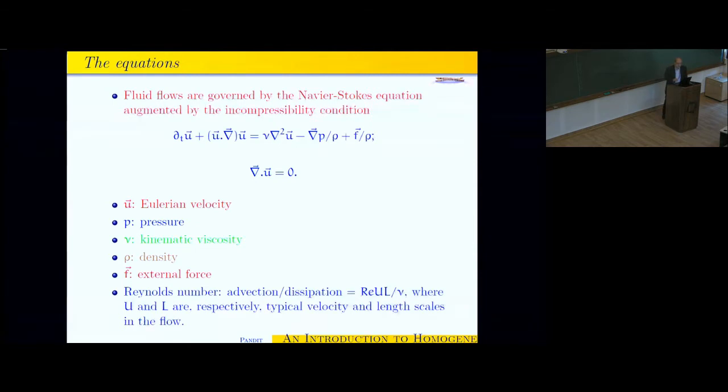As probably all of you know, the fluid flows are governed by the Navier-Stokes equation, and we will restrict ourselves to low Mach number flows, so we will use the incompressibility condition. u is the Eulerian velocity, p is the pressure, nu the kinematic viscosity, rho the density, f the external force, and this divergence u equal to zero imposes the incompressibility constraint. And again, the Reynolds number, that should be r equal to ul over nu.